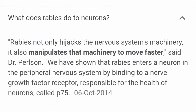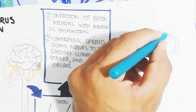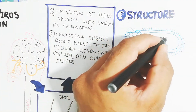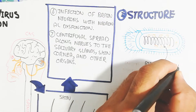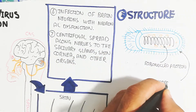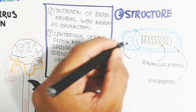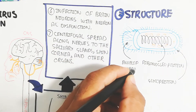Rabies not only hijacks the nervous system machinery, it also manipulates that machinery to move faster. Rabies enters a neuron in the peripheral nervous system by binding to a nerve growth factor receptor called the p75 protein, which is responsible for neuron health. The structure of the rabies virus contains a matrix protein, enveloped membrane, ribonucleoprotein, and glycoprotein, and is rod-like in shape.